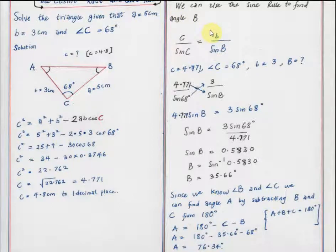So using the sine rule, remember the sine rule states that the side divided by the sine of its angle equals another side divided by the sine of that angle. So C over sin C equals B over sin B.